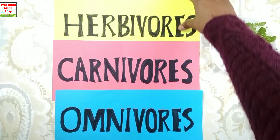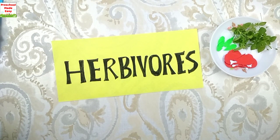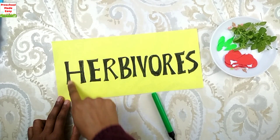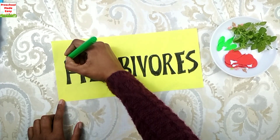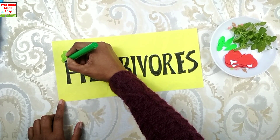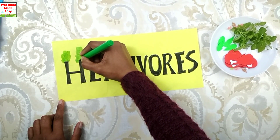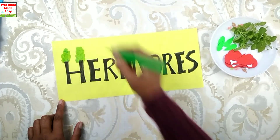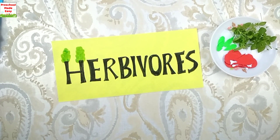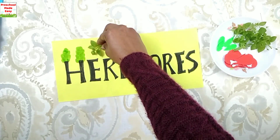First comes herbivores. These animals eat only plants. This letter H has two bars that look like the trunk of a tree. Make leaves with a green marker on the trunks. Now it is very clear that animals belonging to this category eat only plants. Jo animals plants khate hain woh herbivores hain.